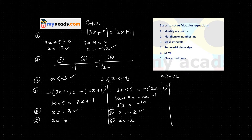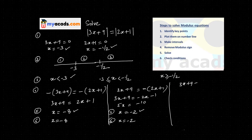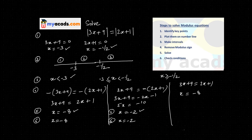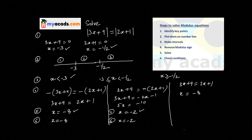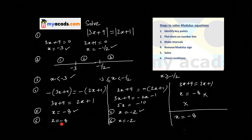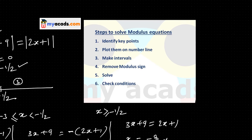My third interval is x greater than or equal to minus 1 by 2. In this interval, 3x plus 9 is positive and 2x plus 1 is also positive, so I remove the modulus signs directly. This gives 3x plus 9 equals 2x plus 1, so x equals minus 8. But my condition requires x to be greater than or equal to minus 1 by 2, and minus 8 does not satisfy this. So this solution is rejected.